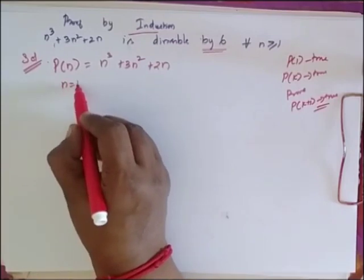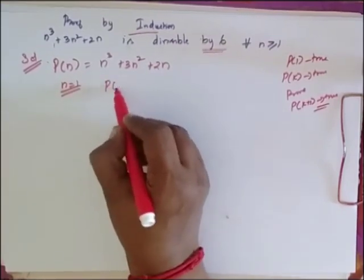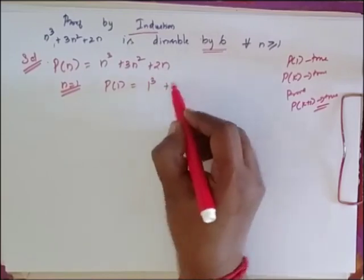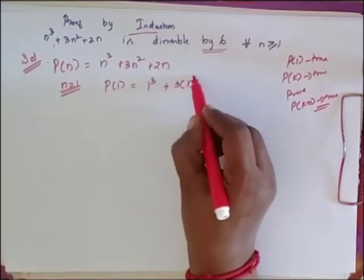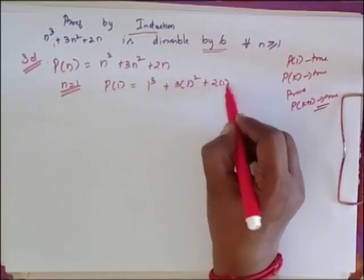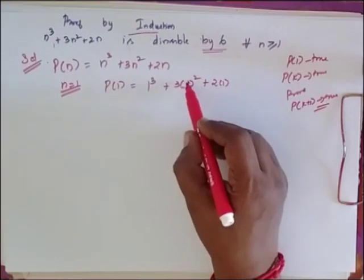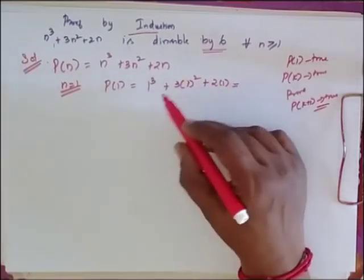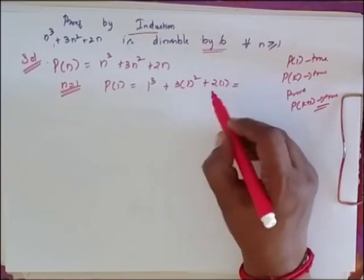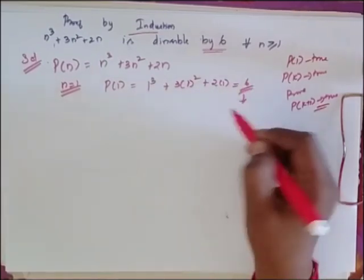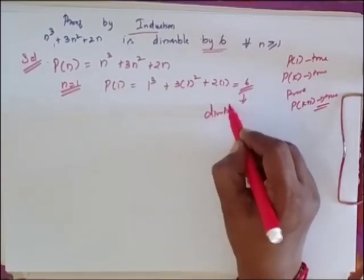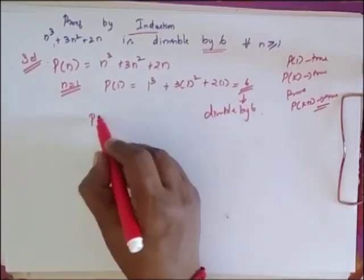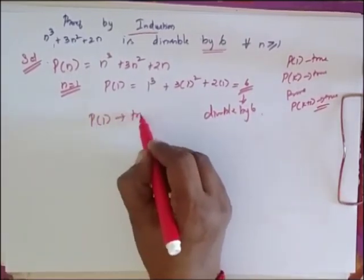Let n = 1. So P(1) is equal to 1³ + 3×1² + 2×1. Wherever I have n, I am substituting 1. So I get 1 + 3 + 2, which is 6, which is divisible by 6. So now I say that P(1) is true.